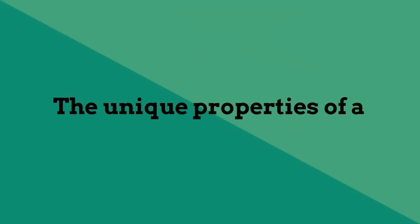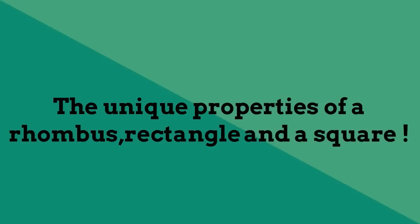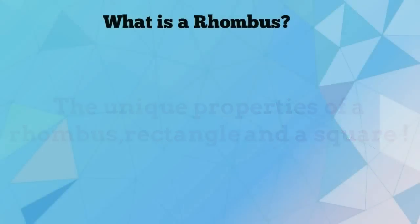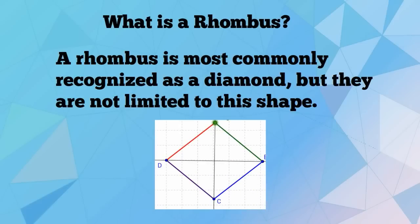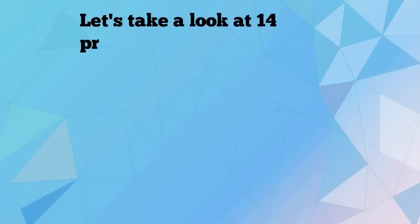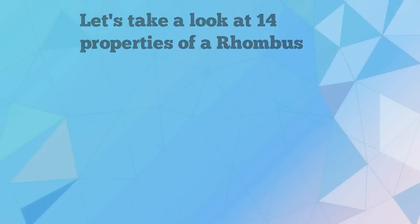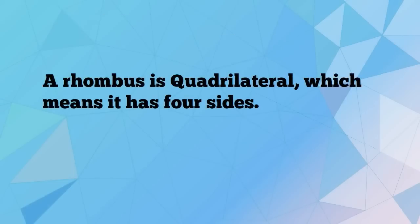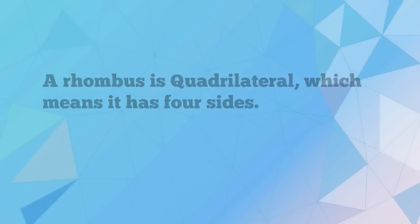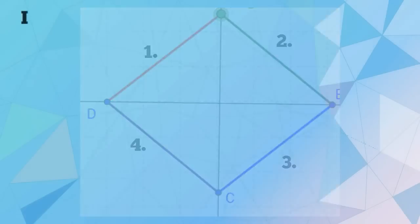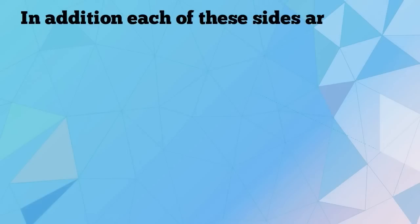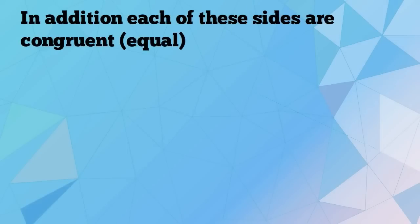Let's look at some of the unique properties of a rhombus, rectangle, and square. What is a rhombus? A rhombus is most commonly recognized as a diamond, but they are not limited to this shape. Let's take a look at 14 properties of a rhombus. A rhombus is a quadrilateral, which means it has four sides. In addition, each of these sides are congruent or equal.